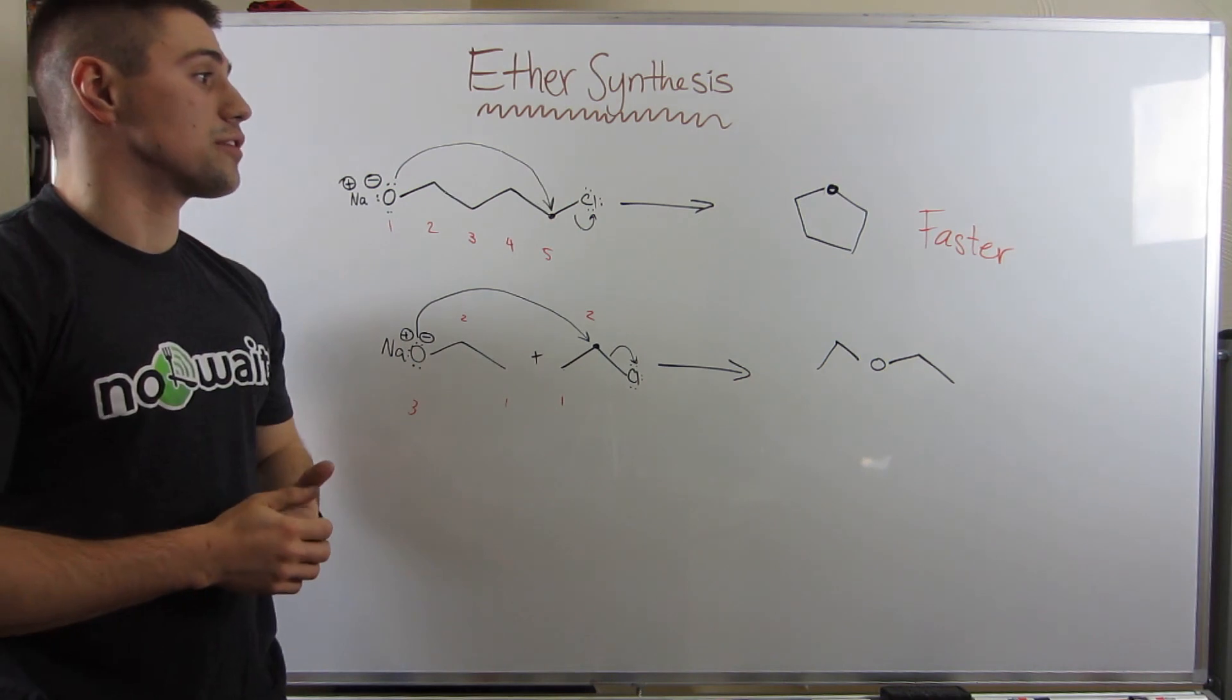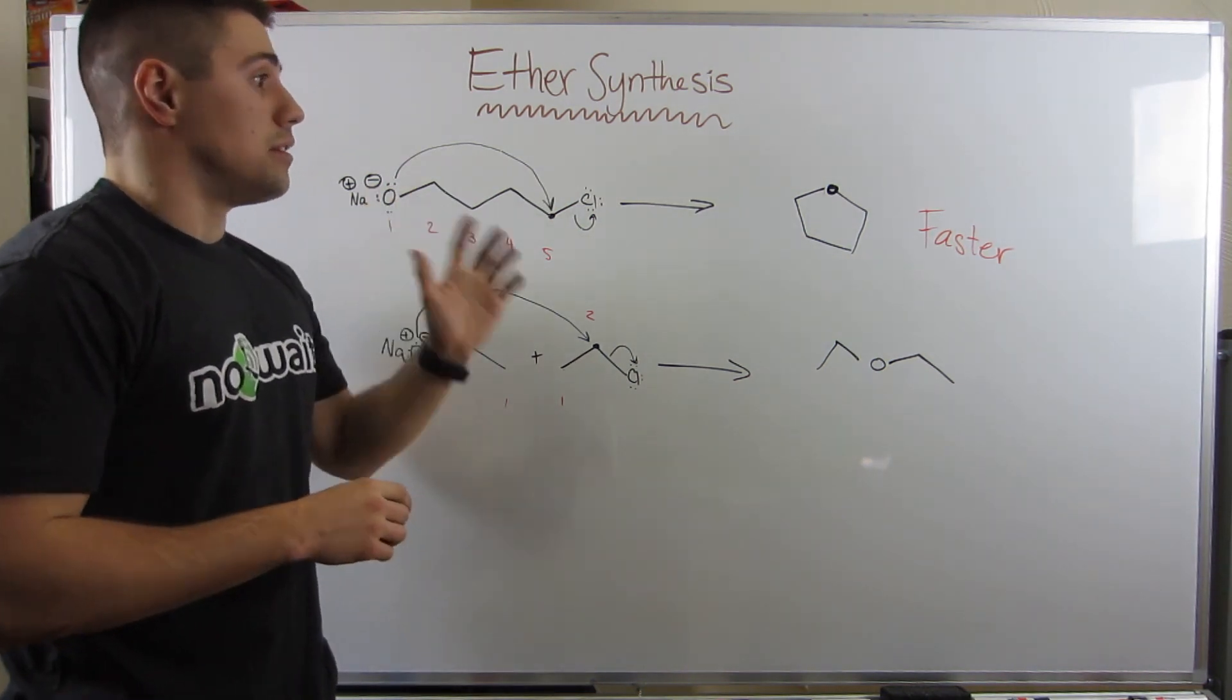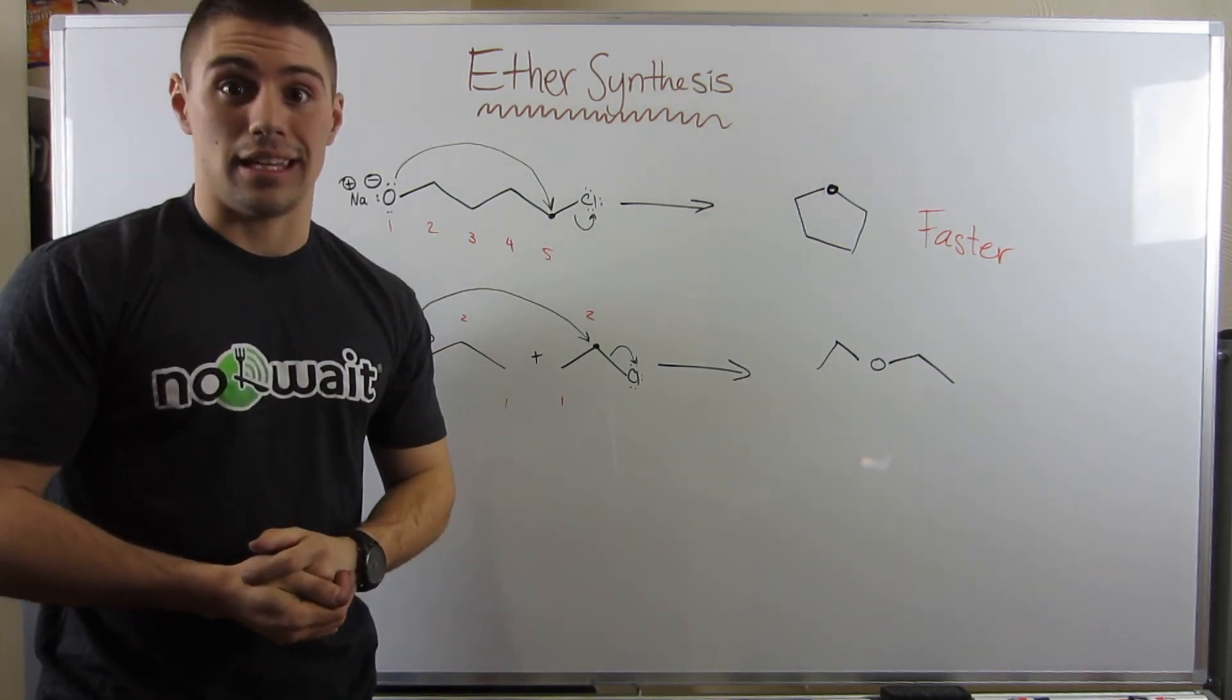Okay, that closes the book on ethers. We just have one video to talk about epoxides and then we are done with all these alcohol derivatives, and then we'll be plunging straight into alkenes.